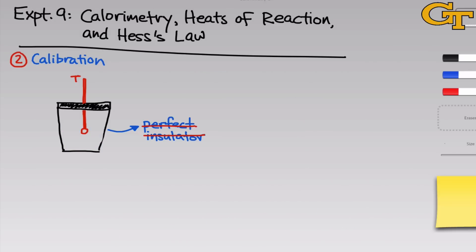So far, we've talked about calorimeters as if they're perfect insulators. However, no calorimeter in practice is a perfect insulator, and that means there will always be heat flow to or from the walls of the calorimeter in the course of a reaction or any temperature change occurring inside. To account for this, we need to do a calibration procedure in which we determine the number of joules absorbed or released by the walls of the calorimeter per degree C change in temperature.